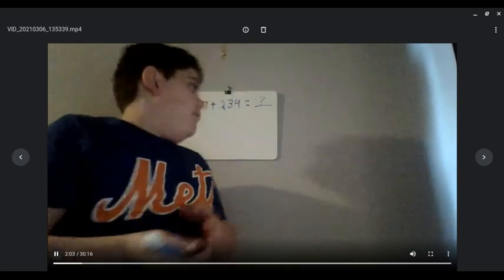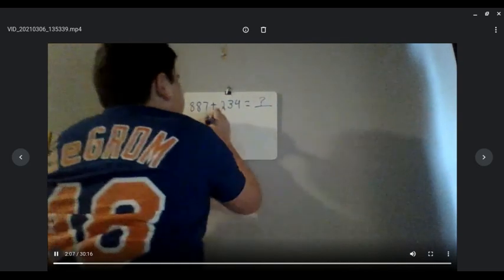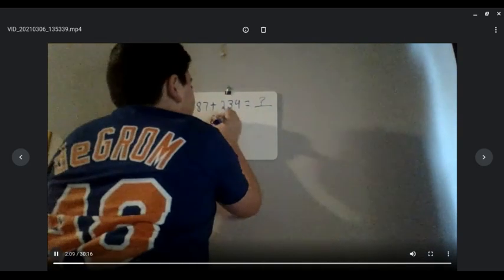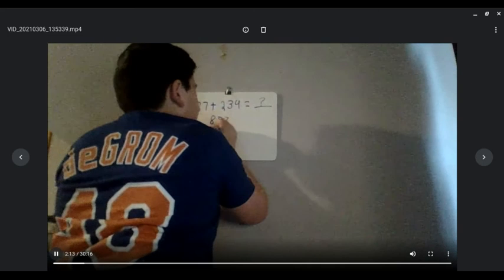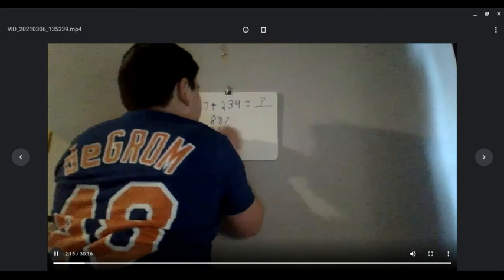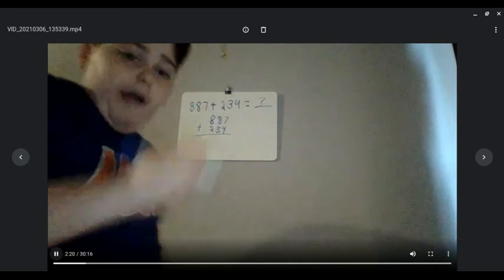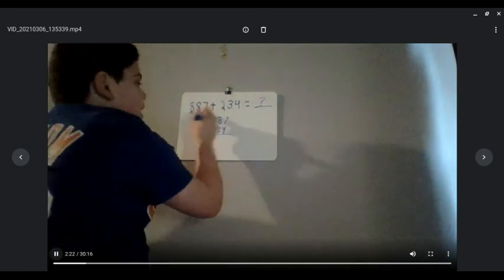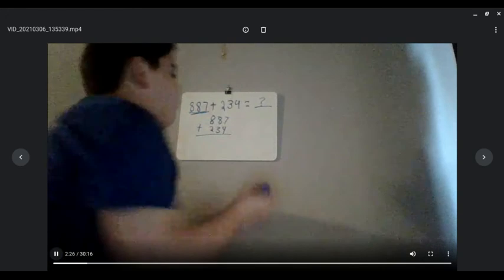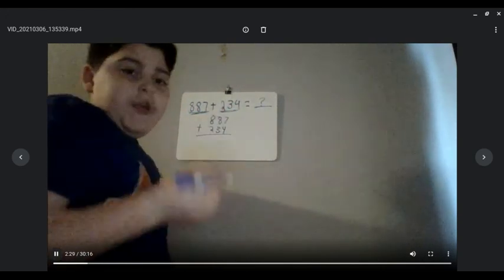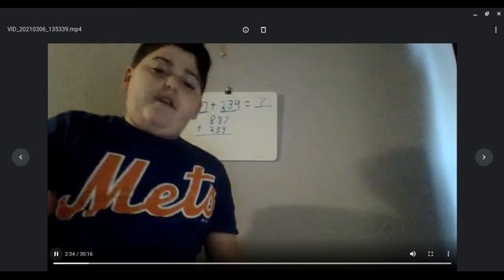Now hopefully, if you have your answer, we should be rewriting it by putting 887 plus 234, then the line. And another thing: you always put the bigger number on top, like we did here. 887 is bigger than 234, so by putting 887 on top, it will be easier for us.